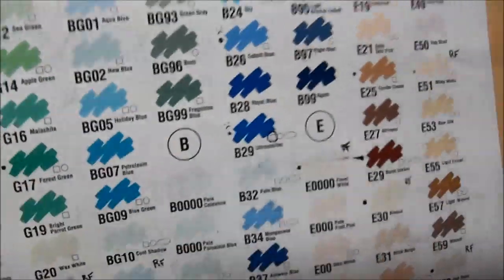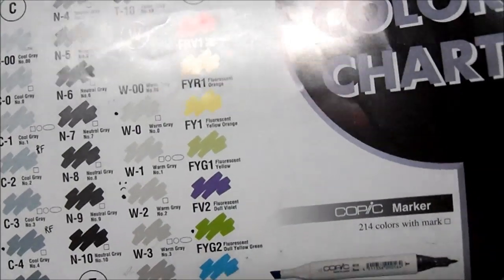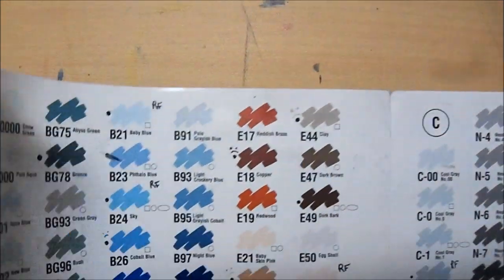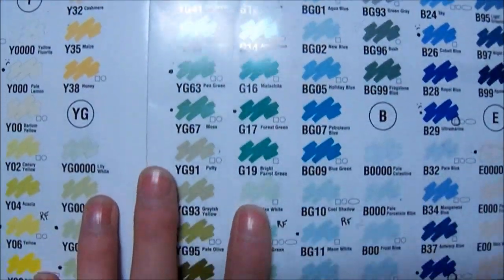So let's see. This right here is a Copic color chart. This is a double-sided poster that's free at most art stores that offer Copic markers. This one is out of date because there have been two sets released since this one has been printed.